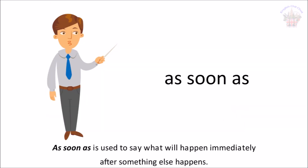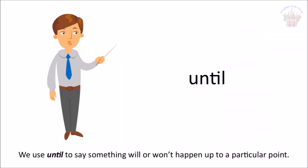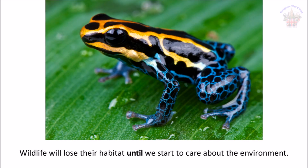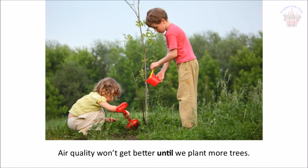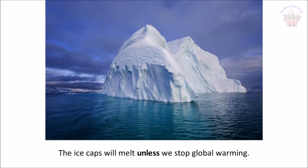'As soon as' is used to say what will happen immediately after something else happens. For example: 'I'll buy an electric car as soon as I save enough money.' We use 'until' to say something will or won't happen up to a particular point: 'Wildlife will lose their habitat until we start to care about the environment.' 'Air quality won't get better until we plant more trees.' We use 'unless' to describe a result if something doesn't happen: 'The ice caps will melt unless we stop global warming.'